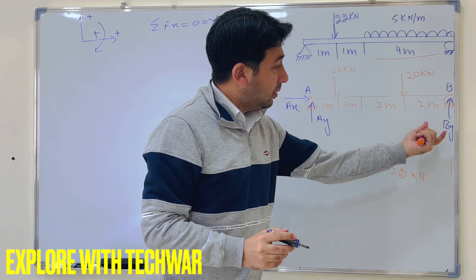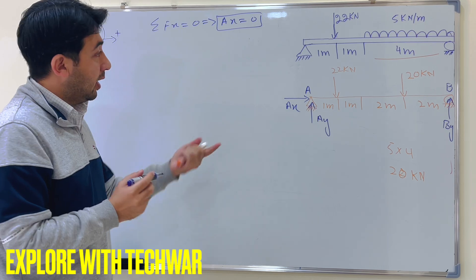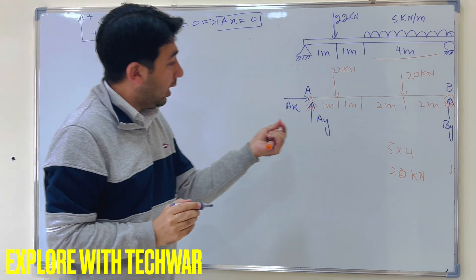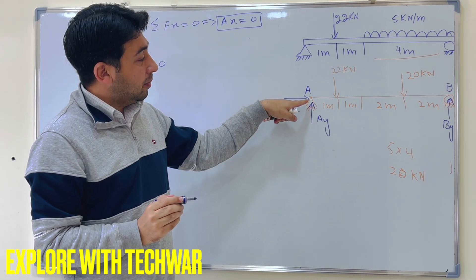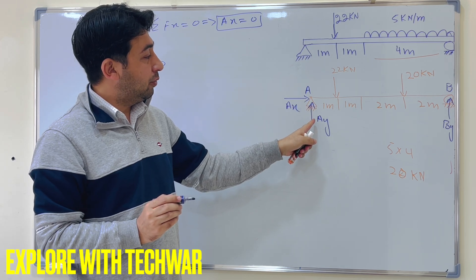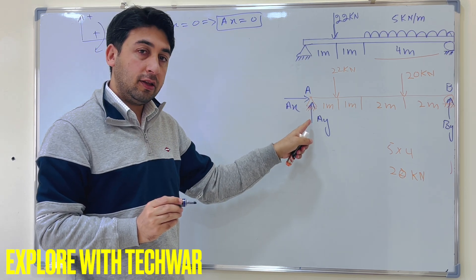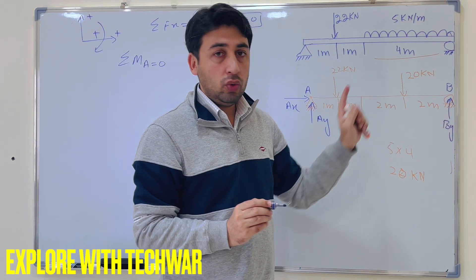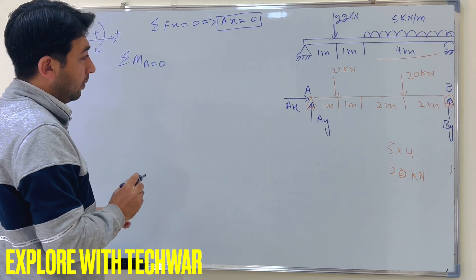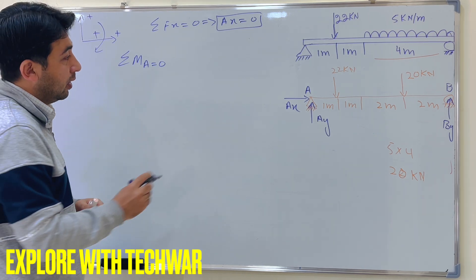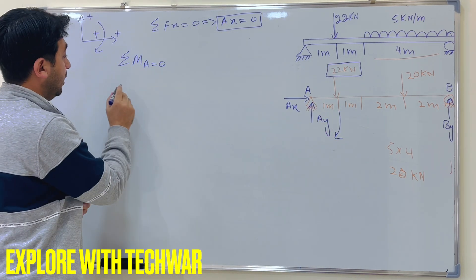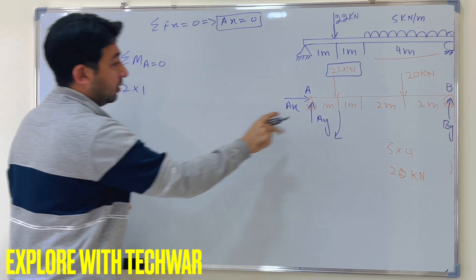To find AY and BY, we apply the moment condition: the sum of moments about point A equals zero. Taking moments about A means the moment due to AX and AY are both zero since they pass through point A, leaving BY as the only unknown. The 22 kilo Newton force produces a clockwise moment, so we write 22 times 1, since its distance from A is 1 meter.